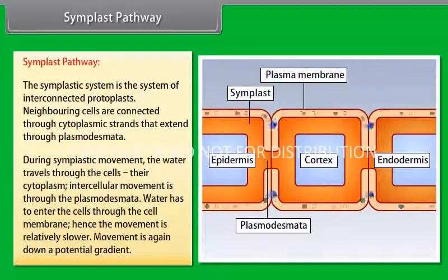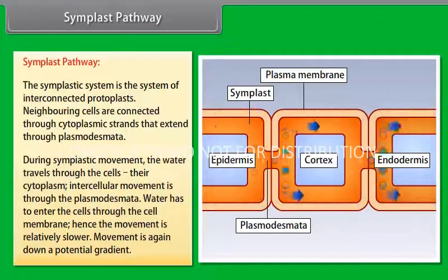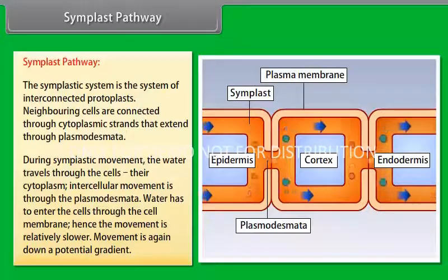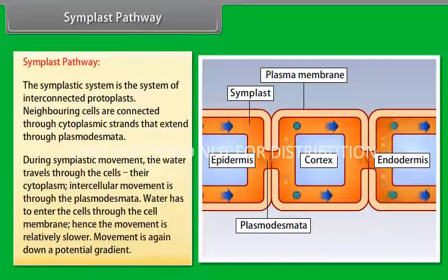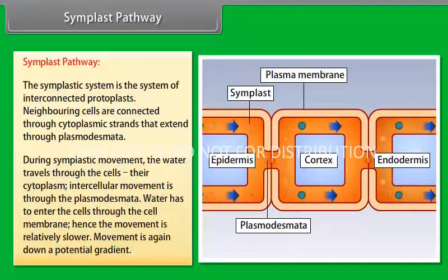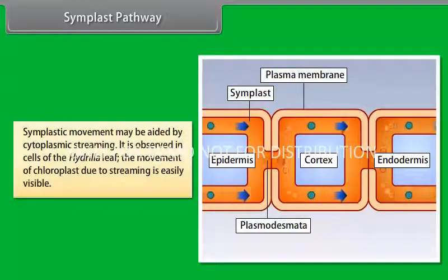During Symplastic movement, the water travels through the cells, their cytoplasm. Intercellular movement is through the plasmodesmata. Water has to enter the cells through the cell membrane. Hence, the movement is relatively slower. Movement is again down a potential gradient.